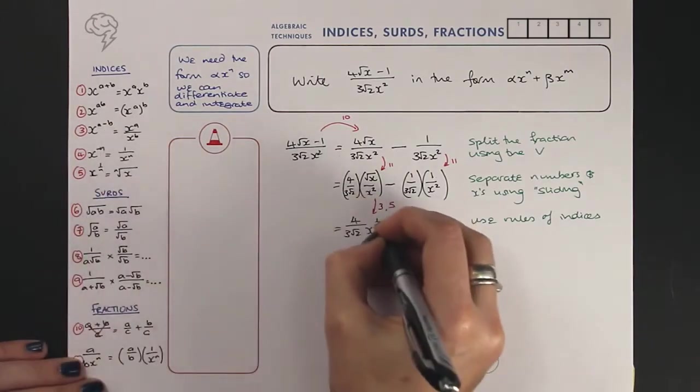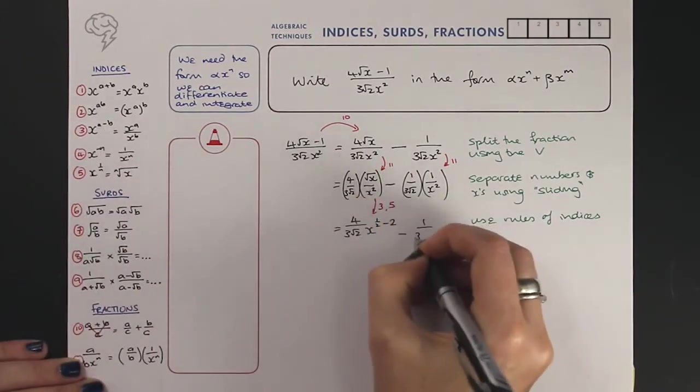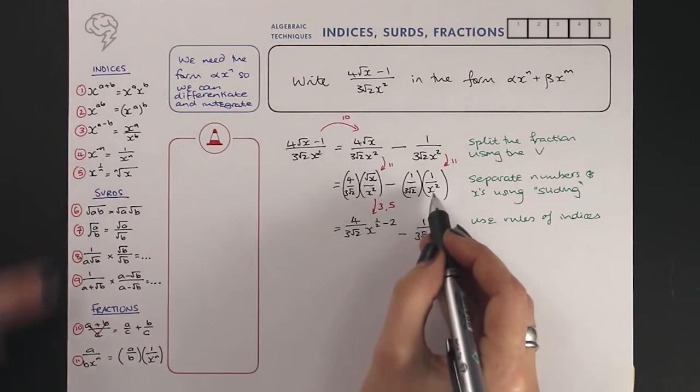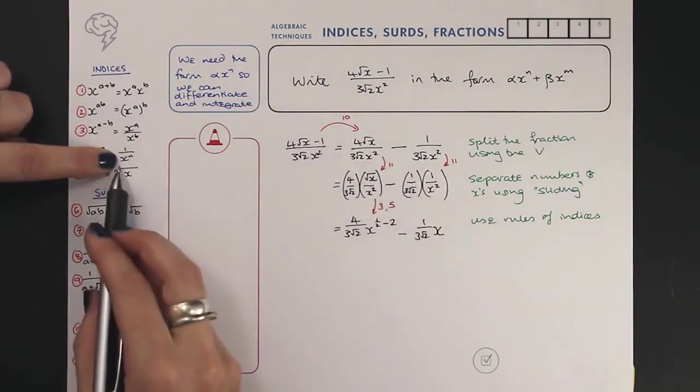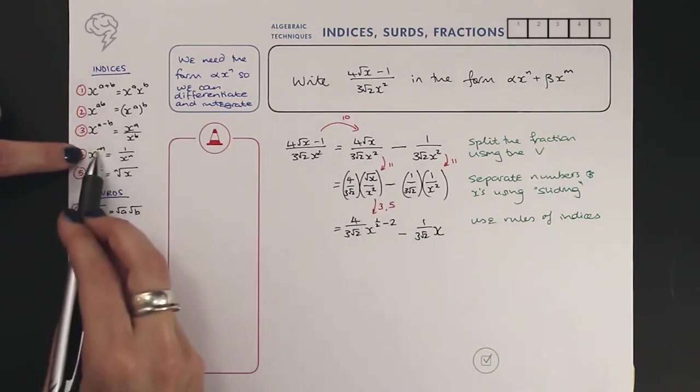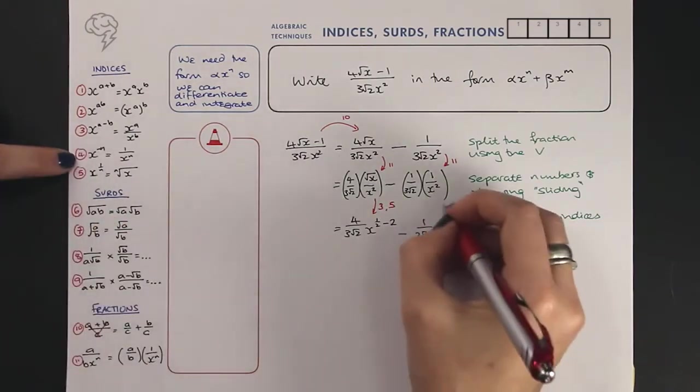Half minus two. Here we've got one over x to the power of two, which is written x to the power of minus two. So this is using rule four.